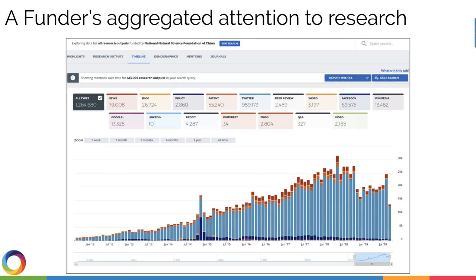These are the 413,000 outputs that have been funded by the NNSFC over time — an enormous amount compared to their role as an author or affiliation. Their role here is really as a funder, even if research was published at Beijing University or Cambridge, because they do fund research around the world. We can see trends over time — they had a couple of years that were real killers, the general trend is significantly upwards, with a little drop between July 2018 and January 2019, but still rising. We're only three-quarters of the way through 2019.